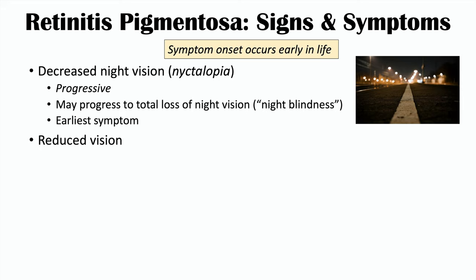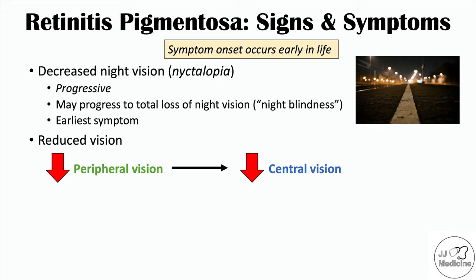This condition can also lead to reduced vision overall as rod cells diminish in number. Cone cells can also start to diminish as well. What often happens is that peripheral vision — the vision on the sides of the visual field — is lost first, leading to tunnel vision. Then as the condition advances and worsens, central vision begins to be affected as well. It's important to always assess peripheral vision in patients, as they may not notice that it is starting to be reduced.